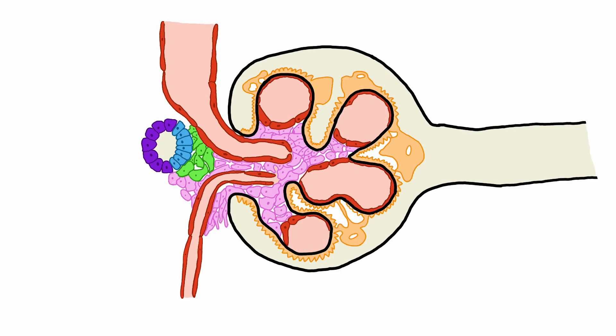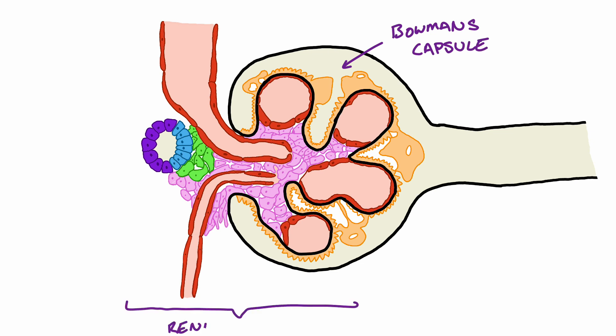Blood enters the kidneys via the renal arteries. From here there is further branching and dividing of the arteries until finally terminating in a small clump of capillaries called glomeruli. Each glomerulus is enclosed by the Bowman's capsule, and together the glomerulus and the Bowman's capsule form the renal corpuscle. The renal corpuscle is where the first stage of urine formation occurs, as plasma is filtered out of the glomerulus into the Bowman's space, from where it drains into the proximal tubule.